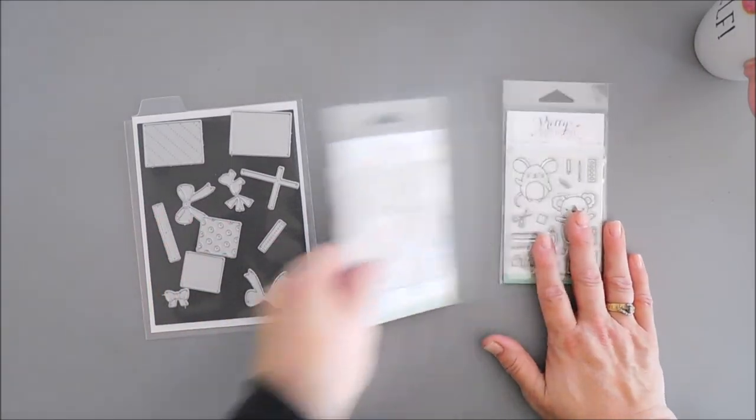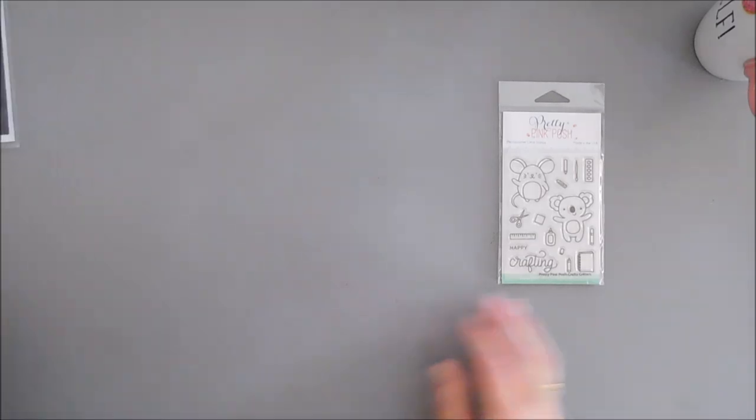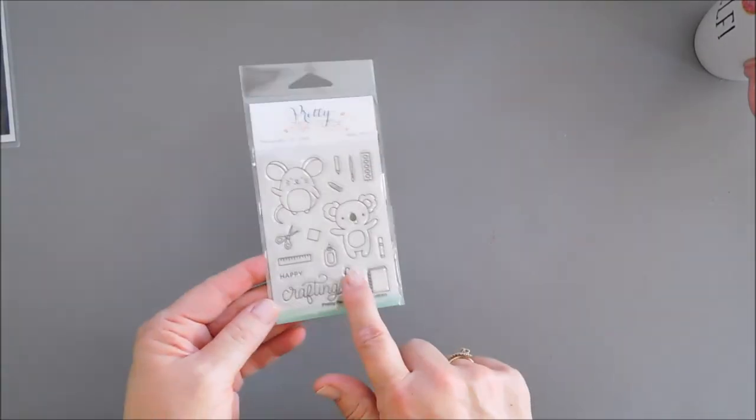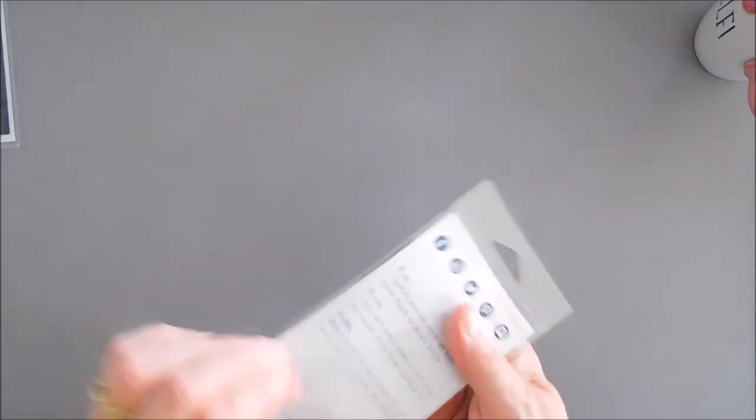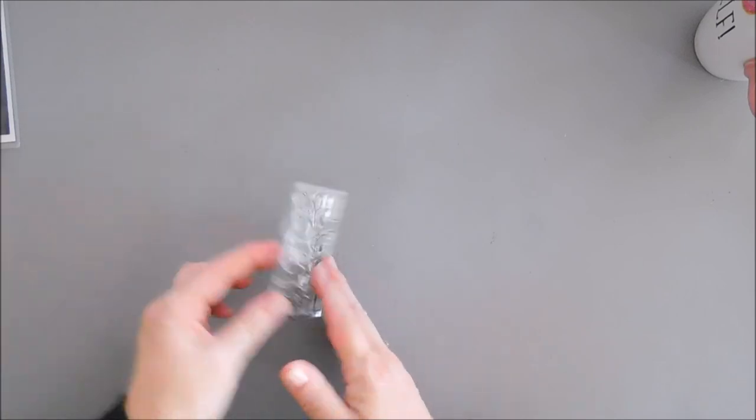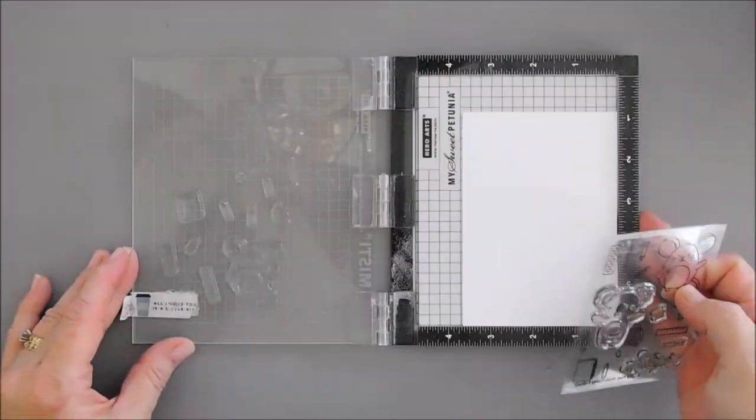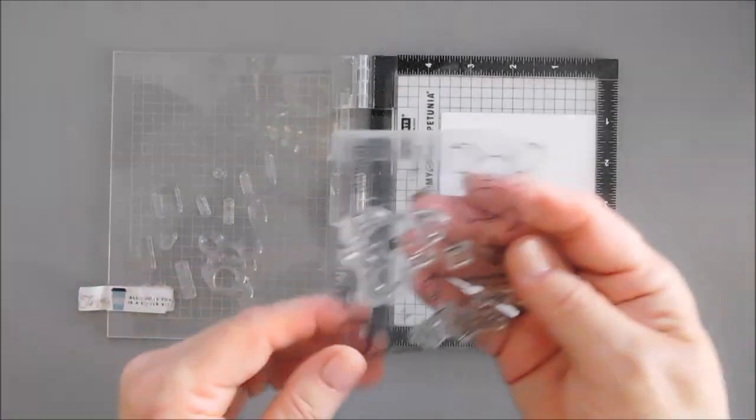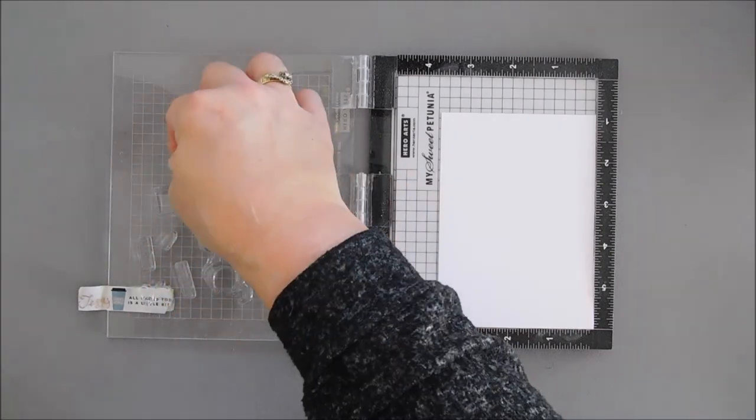So we're going to start by doing a little bit of stamping. The coloring is going to be really basic because for the most part, all the little crafty supplies in this set are on the smaller side. So coloring is going to be pretty easy. Let's go ahead and bring in our stamping positioner. I went ahead and put all my images on the lid of my Misti.